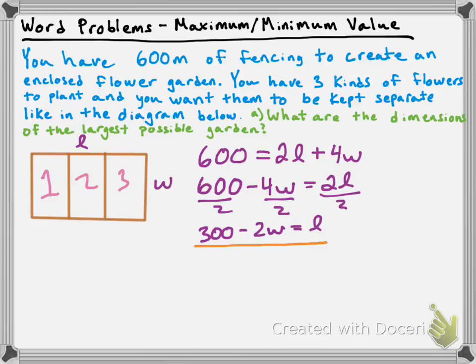The next goal is to find the width that gives the biggest possible area. If I'm looking for the maximum area, I need an equation for area that I'm going to maximize — which implies there will be a maximum value. That tells us the equation we get for area is going to be a quadratic one, and specifically it'll be one that opens down. Remember that the area formula for a rectangle is A equals L times W.